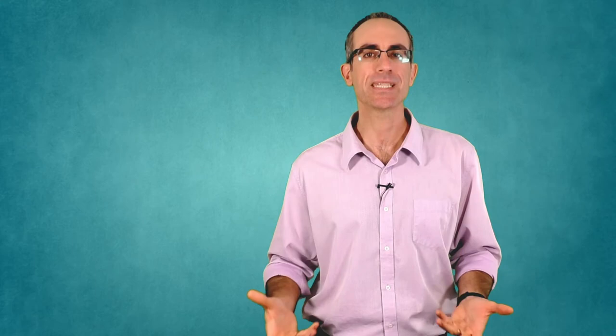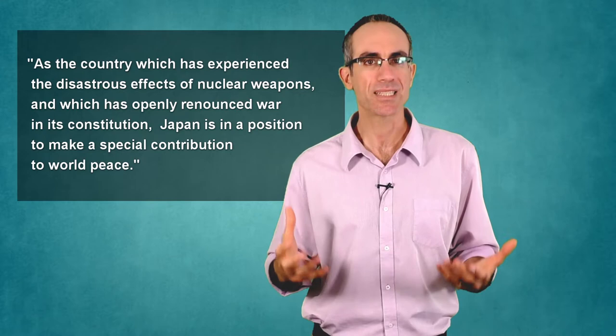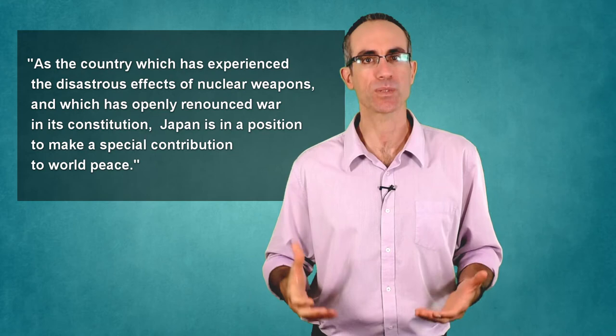In 1962, Yukawa and two of his colleagues initiated a similar series of conferences for Japanese scientists in Japan, which informally became known as the Japanese Pugwash. The final statement of the 1962 conference argued against the principle of nuclear deterrence, and instead emphasized the significance of the Japanese constitution's article 9, which stipulated the renunciation of war. It said, as the country which has experienced the disastrous effects of nuclear weapons and which has openly renounced war in its constitution, Japan is in a position to make a special contribution to world peace.